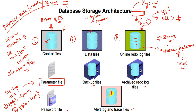With the SPFile, you must use the ALTER command to change parameters. With the PFile, you can use a text editor like vi to edit it directly. All parameter information related to the database resides in the parameter file.